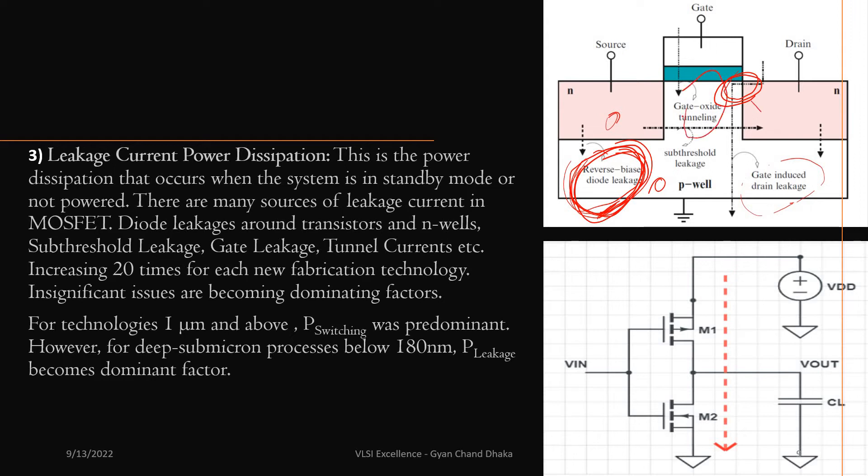The next is subthreshold leakage. When the device is in the subthreshold region or weak inversion region, the formation of the channel has not happened properly. The device is still below the threshold voltage, but in that case, if there is any current flowing through the device in the weak inversion region, the current flowing in that case is the subthreshold leakage current.